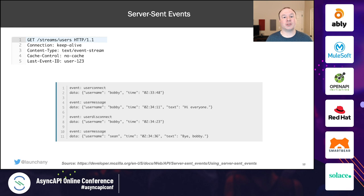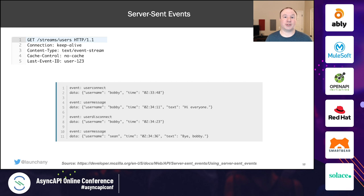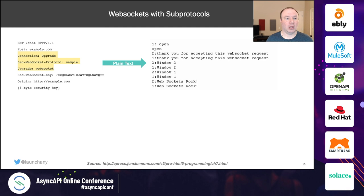Server-sent events help us bridge these kinds of events into the browser. They allow a browser or API client to connect to a specific endpoint via a GET request, specifying a content type of event-stream. We use a keep-alive connection in HTTP 1.1, don't cache the requests, and can pass an optional last-event-ID to recover when offline. The server then pushes JSON, plain text, or other event data to the client. Keep in mind that server-sent events are one-directional — from server to client only.